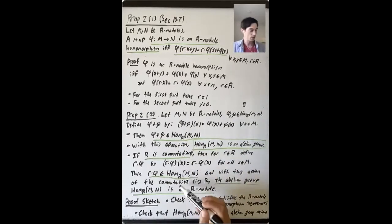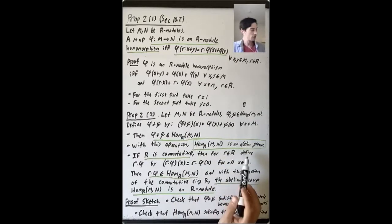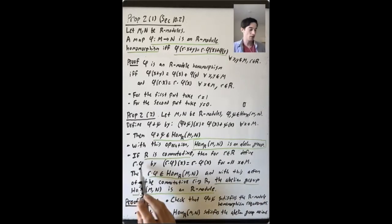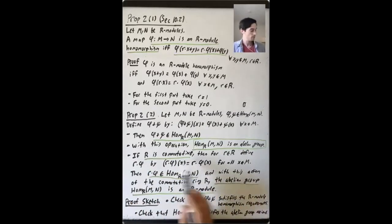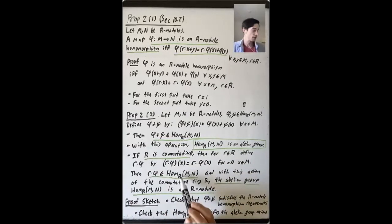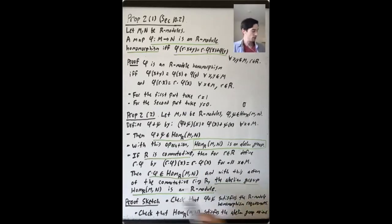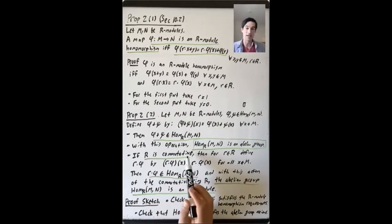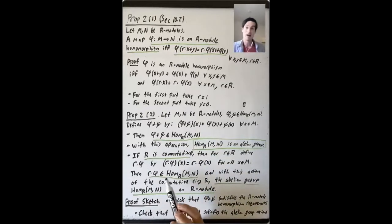What I want to talk about in the rest of this video is this last claim: that if R is commutative, you can define r times phi by this description, and it really is an R-module homomorphism, and with this action the abelian group turns into an R-module. The thing I want to focus on is where does the commutativity of R get used? It really is important that R is commutative, but how are we using it in this argument? I'll pause and erase, and then talk about that issue.